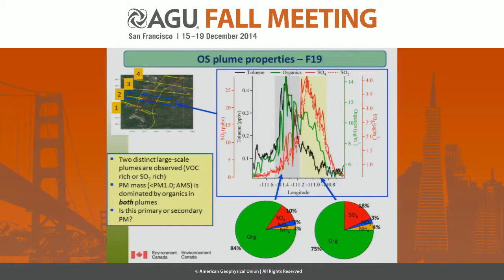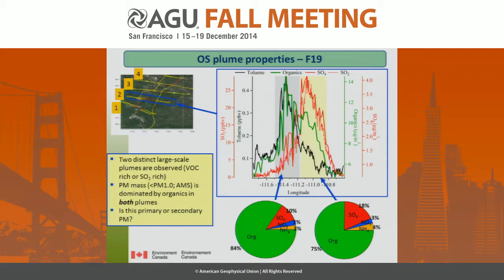This is flight 19, although the results are generally similar for all the transformation flights. We see two large-scale plumes associated with oil sands operations: one is VOC-rich, shown in black with toluene as a representative hydrocarbon, and another which is SO2-rich, shown in red. They're more or less separate, although they do mix a little. At intercept number two, about 50-60 kilometers from the operations, it's already dominated by organic aerosol shown in green. Even about 40 minutes away, you've got about 75 to 85 percent organic aerosol.